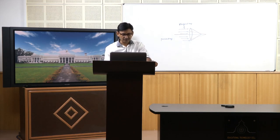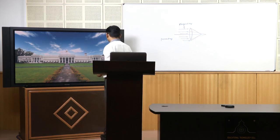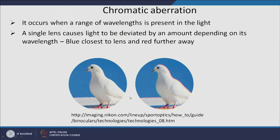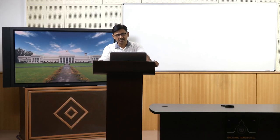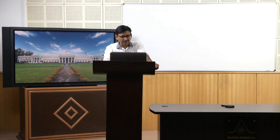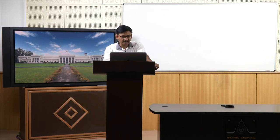The next aberration comes because of the light or electromagnetic radiation used, and it is called chromatic aberration. It occurs when a range of wavelengths is present in the light. Our white light is composed of a range of wavelengths from red up to green and blue. When this kind of light goes through a single lens, it causes light to be deviated by an amount depending on its wavelength. Blue will focus closest to the lens, and red light will focus furthest away.